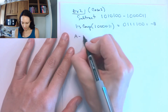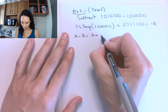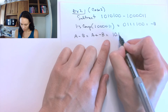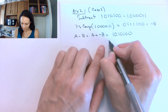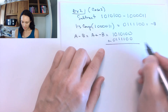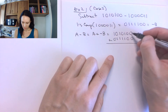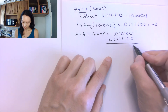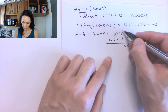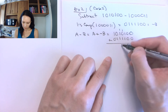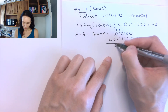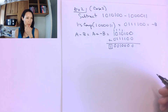So my subtraction problem is now the addition problem a plus negative b: 1010100 plus 0111100. Stacking these and adding column by column: 0 plus 0 is 0; 0 plus 0 is 0; 1 plus 1 is 0 carry 1; 1 plus 1 is 0 carry 1; 1 plus 1 plus 1 is 1 carry 1; 1 plus 1 is 0 carry 1; and 1 plus 1 is 0 with a carry of 1 out. So we get 0000100 with a carry bit of 1 — this is case two.